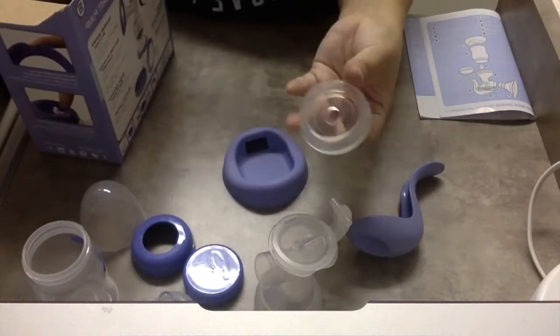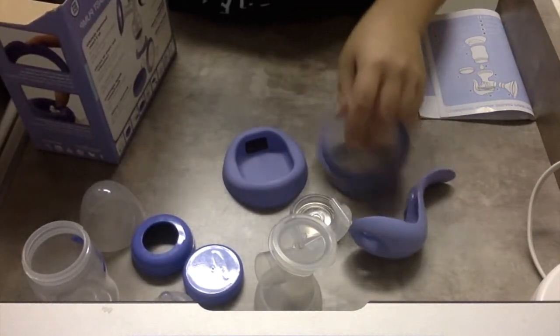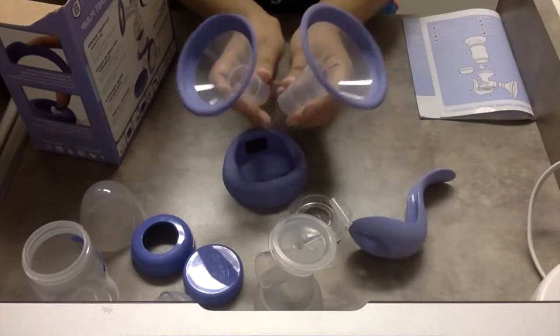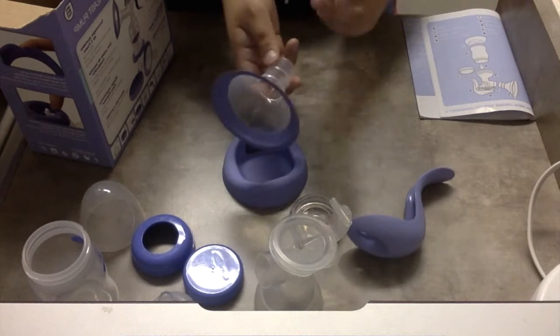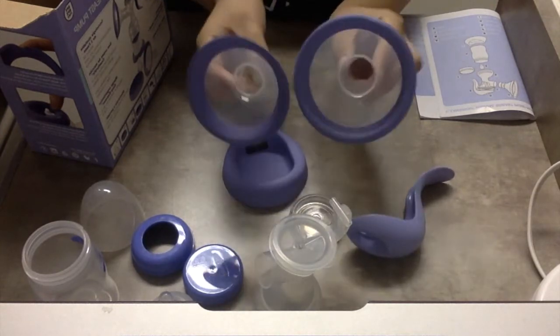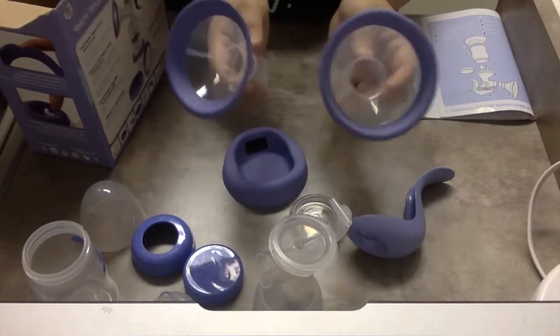And then this is a silicone diaphragm. And then it actually comes with two different flange sizes which is great. So just in case one isn't a great fit you can use the other one. It does have the cushioning around to make it more comfortable around your breast for when you're pumping.